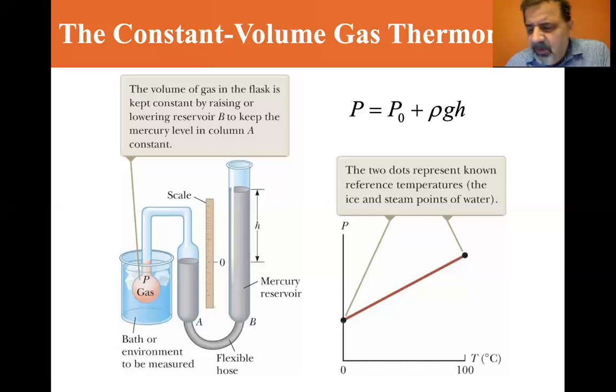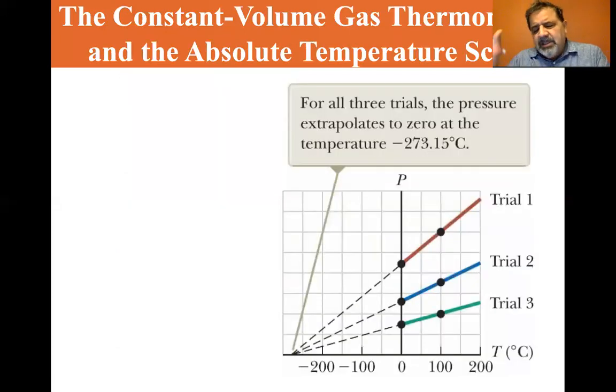Let's say we use three different gases, and we get these three lines, trial one, trial two, trial three. For all three trials, the pressure extrapolates to zero at the temperature of minus 273.15. All of them will go down to this absolute zero point, which is minus 273.15 degrees C.